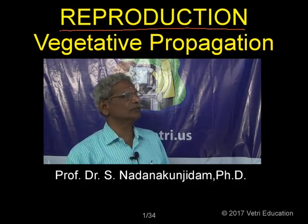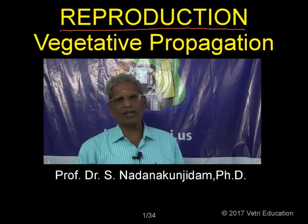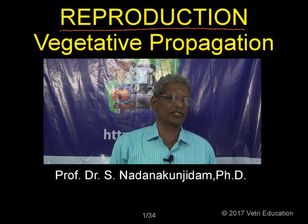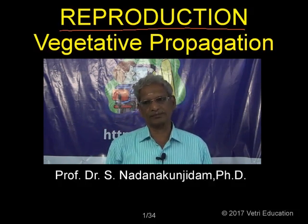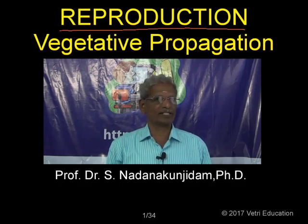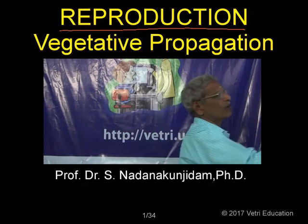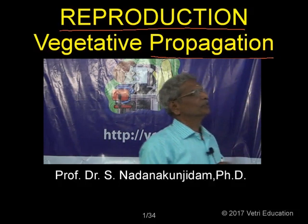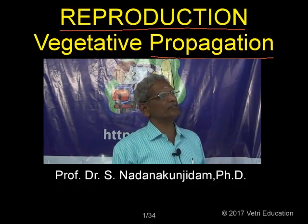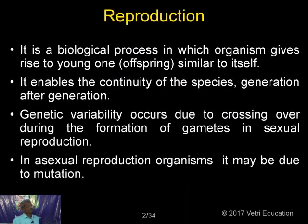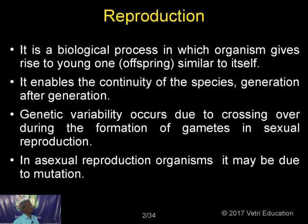Particularly when you come to plants, since they are at a very low level of organization, they reproduce very fast and proliferate. So we are better using the word propagation rather than reproduction. Reproduction in plants occurs by different methods — sexual reproduction, asexual reproduction, and vegetative propagation. It is a biological process in which an organism gives rise to a young one similar to itself, enabling continuity of the species generation after generation.